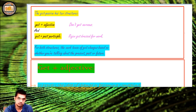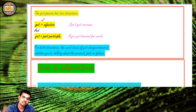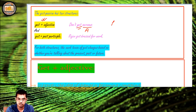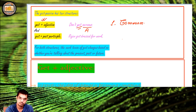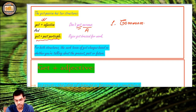Get passive, when considered minutely, has two different structures. One is get plus adjective — for example, 'Don't get nervous,' where 'nervous' is the adjective. That is structure C1. The second structure is get plus past participle — like 'Rajan got dressed for work.' We have already discussed this at the beginning. This second structure, C2, is the one that causes confusion.